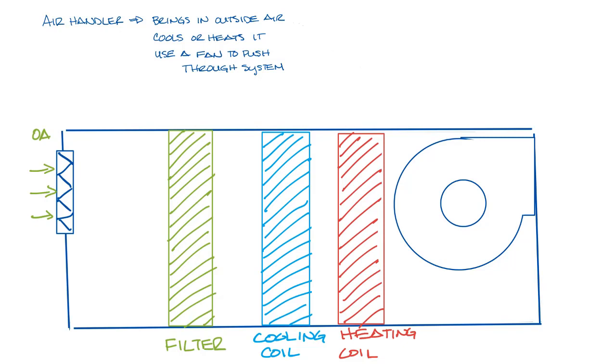Air handlers can have the fan before or after the coils. If the fan is before the coils, it's called blow-through arrangement because the air is blown through the coils. And if it is after the coils, it's called draw-through arrangement because the air is drawn through the coils. Draw-through units are more common than blow-through units, and we can talk about why in a future video.